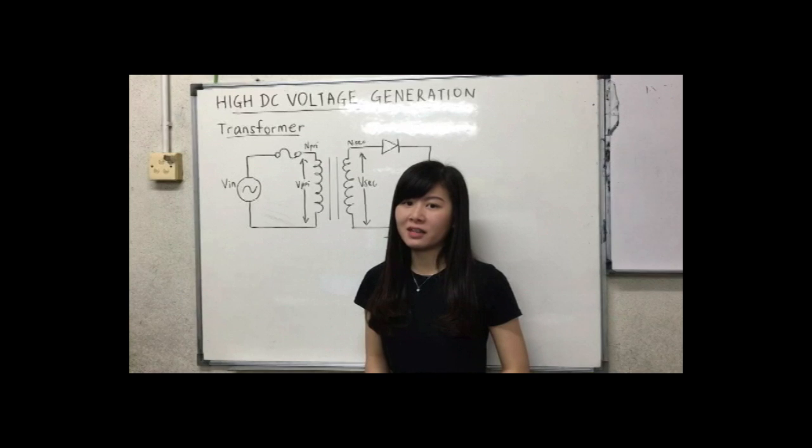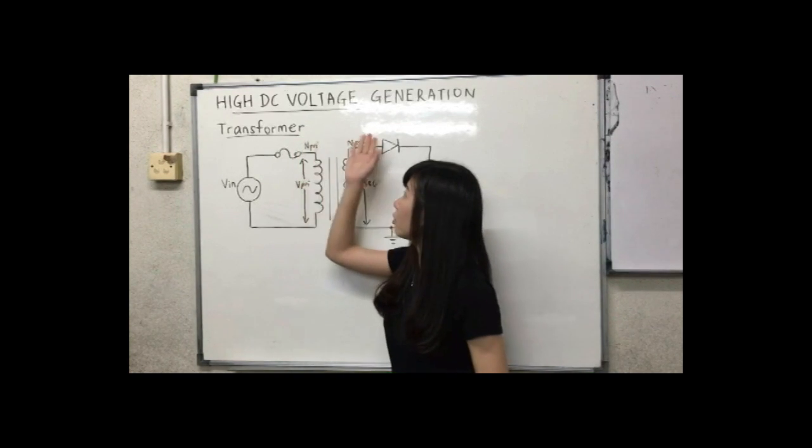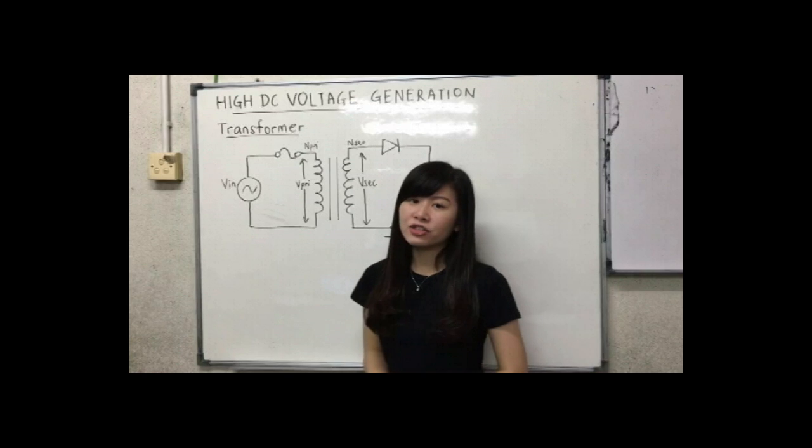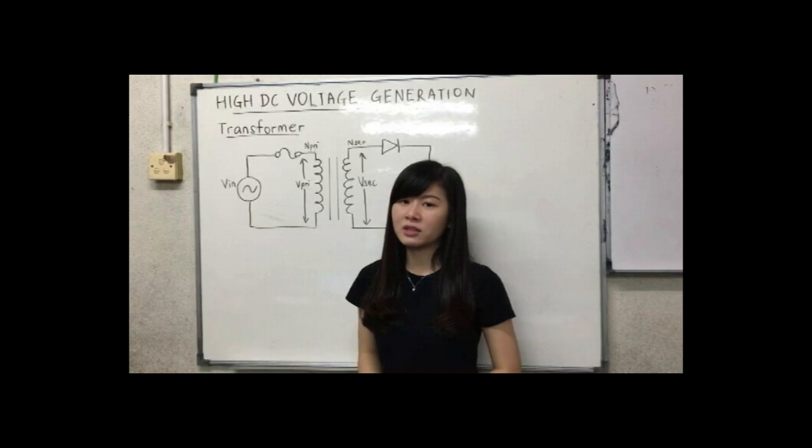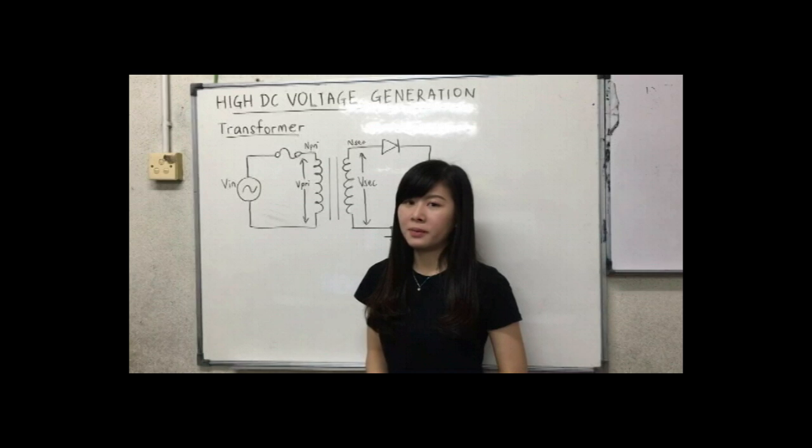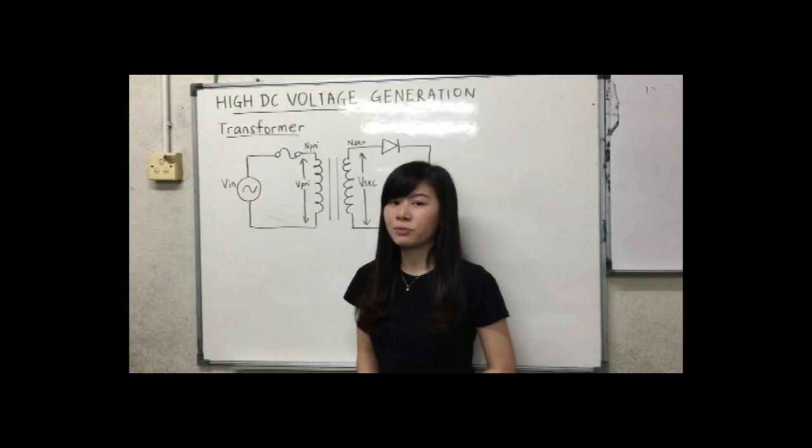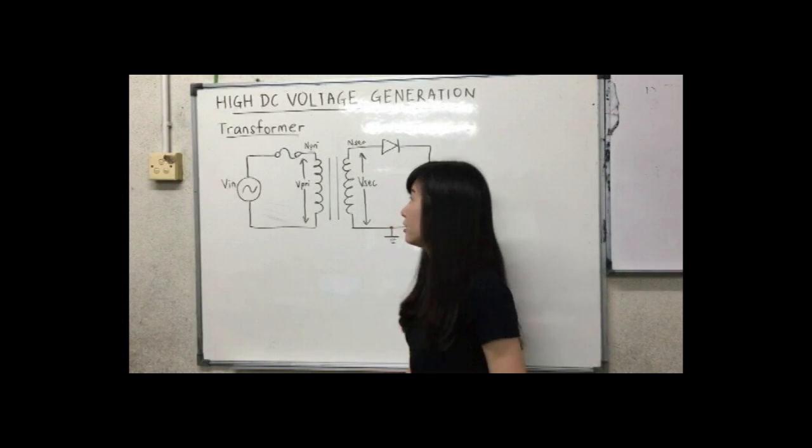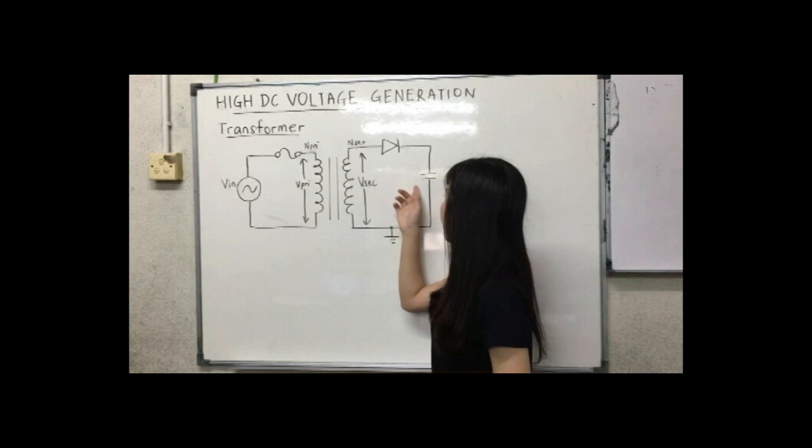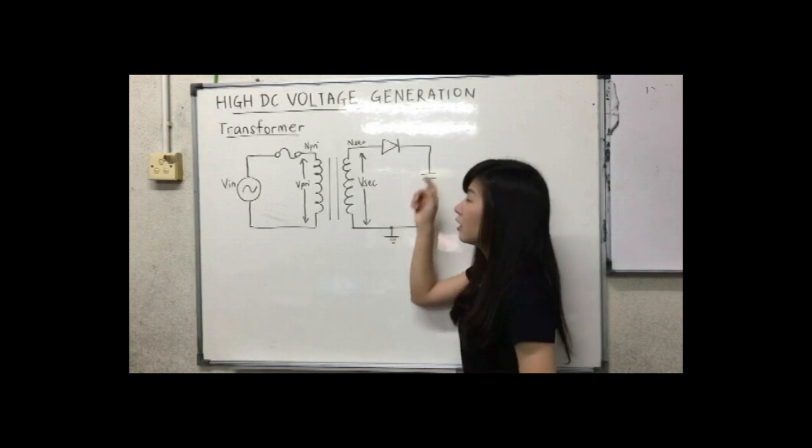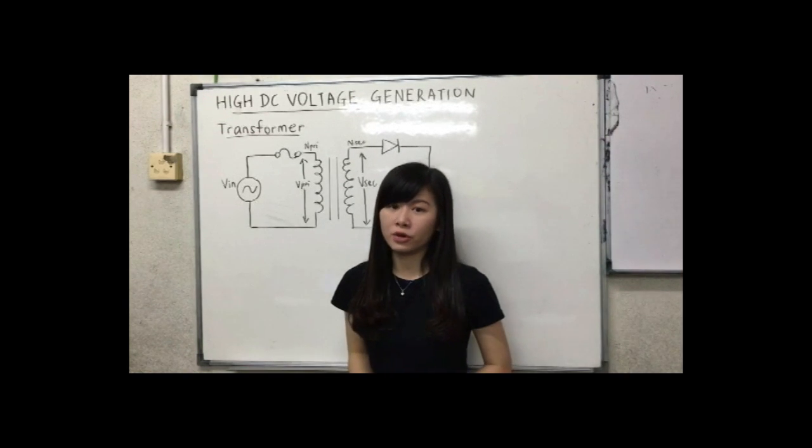In order to have a better understanding of my project, let me explain about high DC voltage generation. Conventionally, transformer is used to generate high voltage. The output produced by transformer will be in AC form signal. Therefore, it has to be connected with a rectifier consisting of diode and capacitor in this arrangement to obtain the DC output voltage.